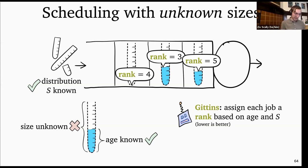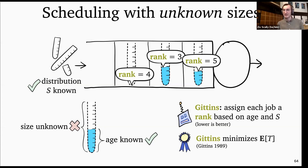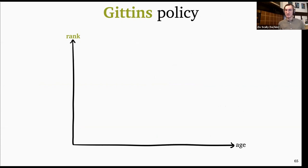Note that the rank doesn't need to be monotonic in the age. So I like to visualize the Gittins policy as constructing rank as a function of age. I'm going to show what Gittins looks like for my favorite job size distribution, where all jobs are either size 1, 6, or 14, each with one-third probability. The general formula for the Gittins rank function is shown here, and I'm not going to spend too much time on this formula — I'll mostly point to the picture.